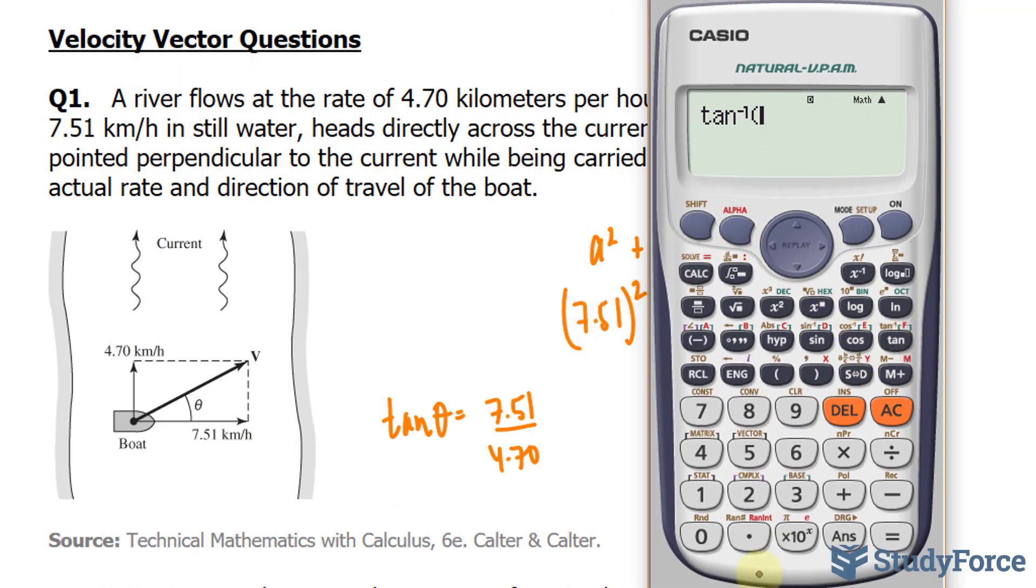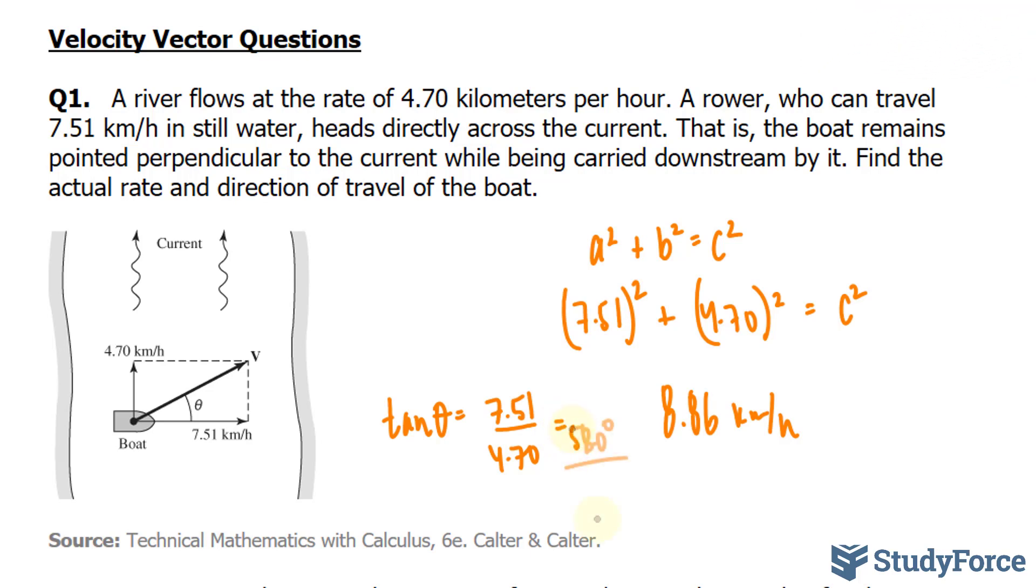Tangent theta equals my adjacent of 7.51 over 4.70. And I'll use inverse trigonometric function here. Inverse tangent for 7.51 divided by 4.70. We get an angle of 57.96 to three significant figures. That should be 58.0. Those are the answers to question number one.